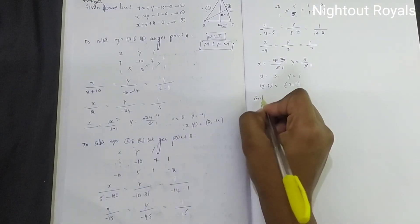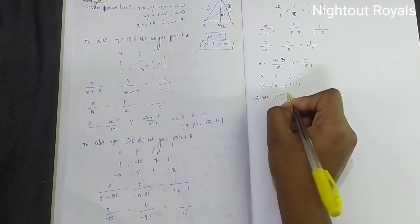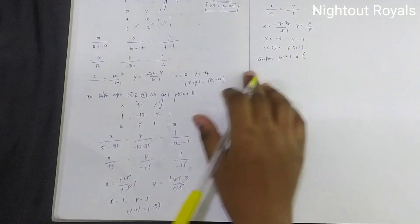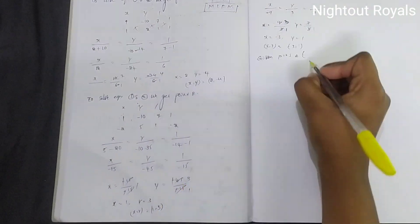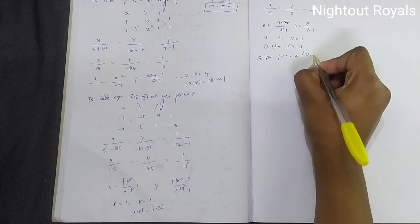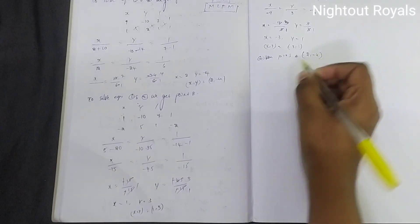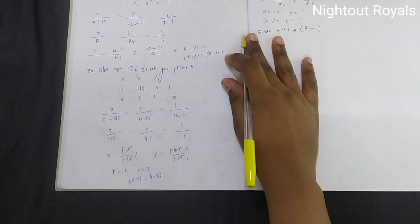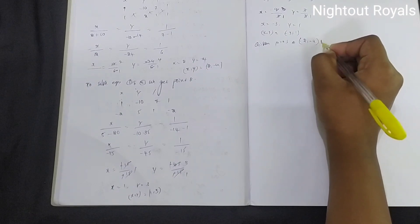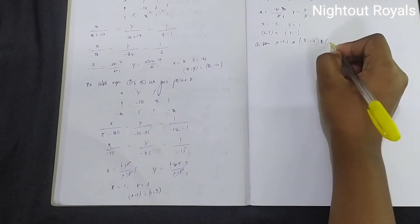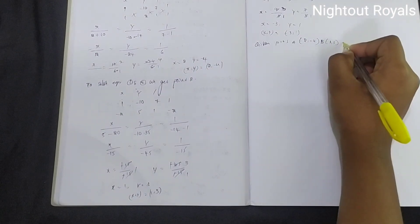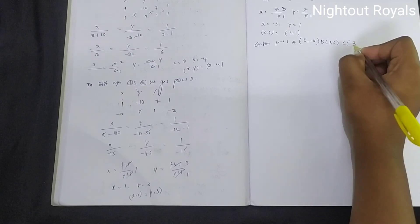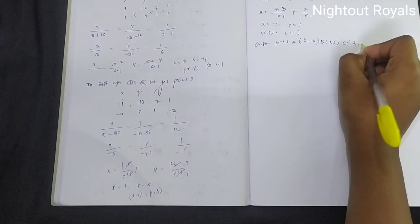Given points summary: A point is (2, minus 4). B point is (1, 3). C point is (minus 3, 1).